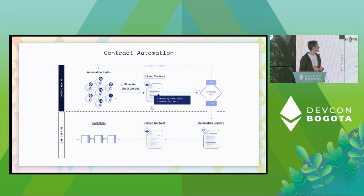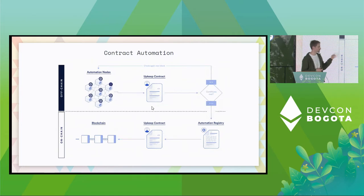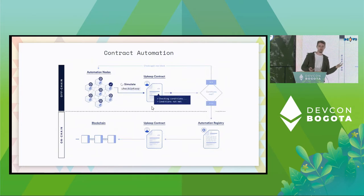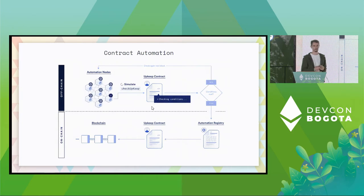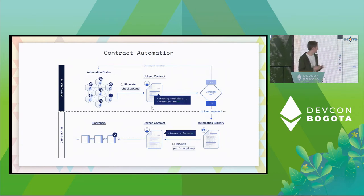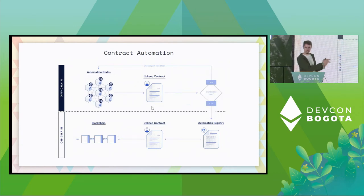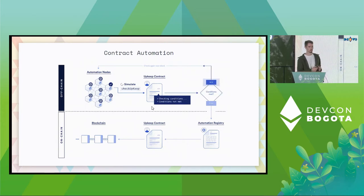With a perform upkeep call, the contract on chain can take whatever logic it wants. For example, it could have paid out our two users A and B depending on the outcome of the hedging contract. This functionality is live today — there are over 250 unique upkeep contracts that have been active in the past 30 days.